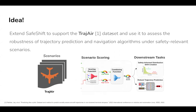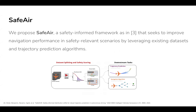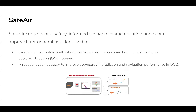So, why don't we extend SAFE shift to support TRAGER? Our approach is SAFER, a safety-informed framework that seeks to improve navigation performance in out-of-distribution scenarios. It consists of scenario characterization and scoring — we create a distribution shift, and the highest-scoring, most safety-critical scenes are used for testing. Then we apply a remediation strategy for improving prediction and navigation in these scenes.